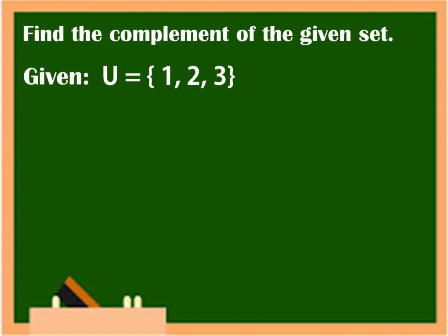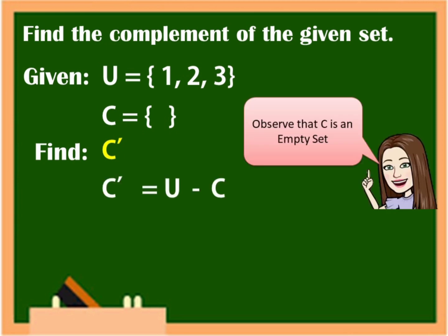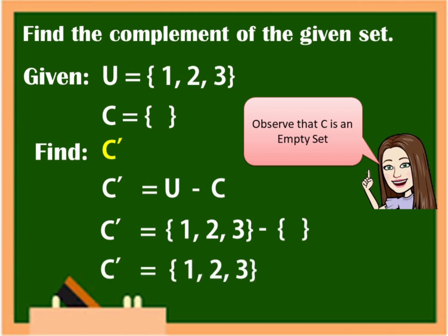Another example: if U is equal to 1, 2, 3 and C is equal to empty set, now we are going to find C complement. To get C complement, you are going to remove the elements in C that can be found in U. Observe that C is the empty set. We all know that empty set has no elements. So, empty set pa rin ang ilalagay natin — wala tayong ibabawas doon sa universal set, walang mawawala sa universal set. So, C complement is also 1, 2, 3. Kasi wala namang pwedeng i-remove na elements sa universal set.